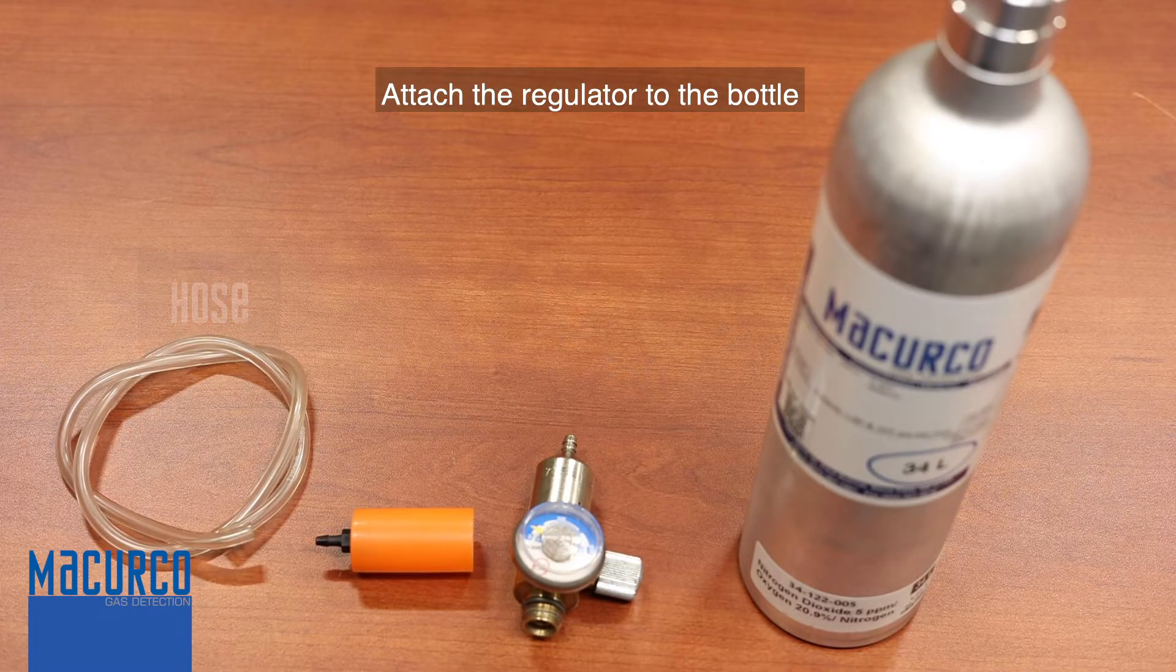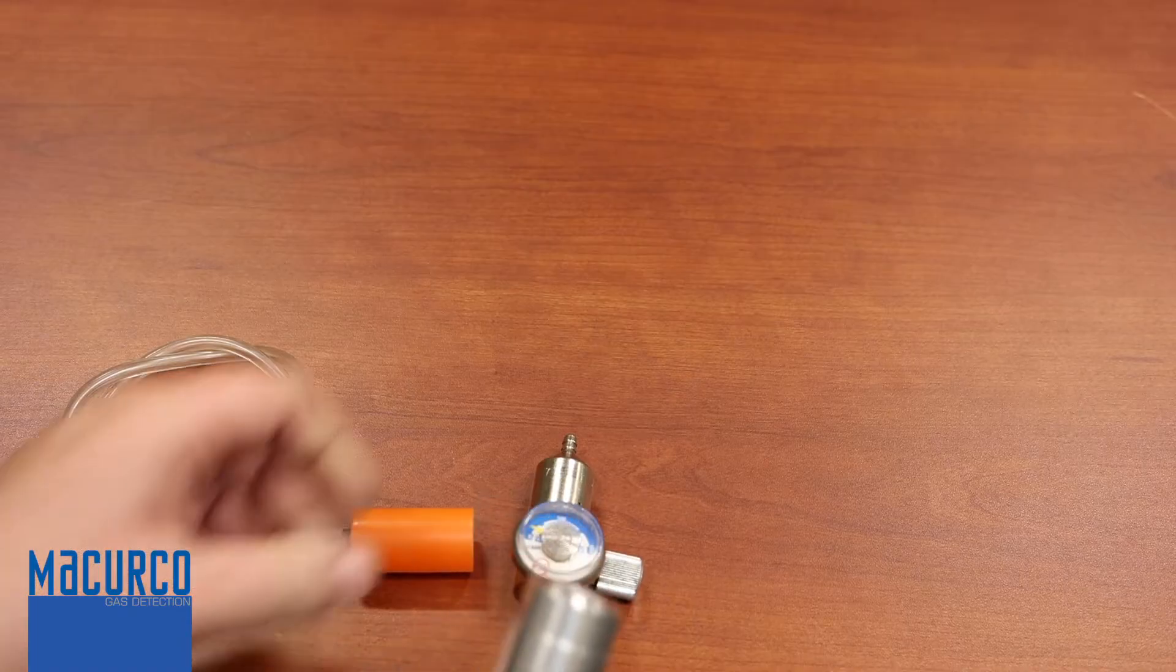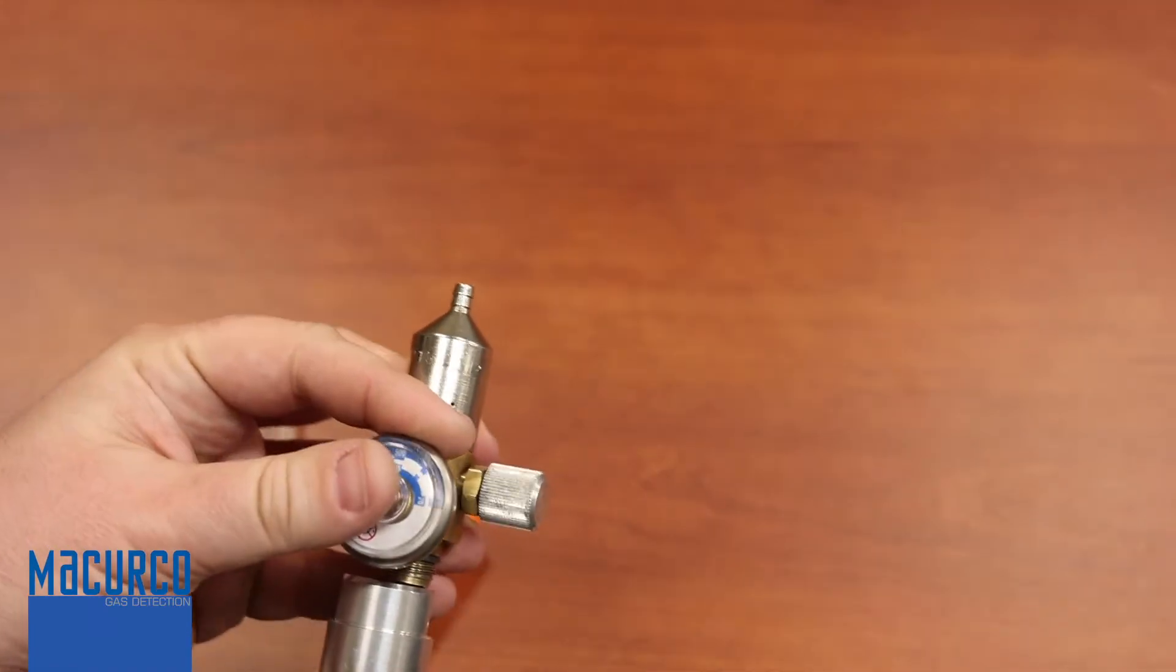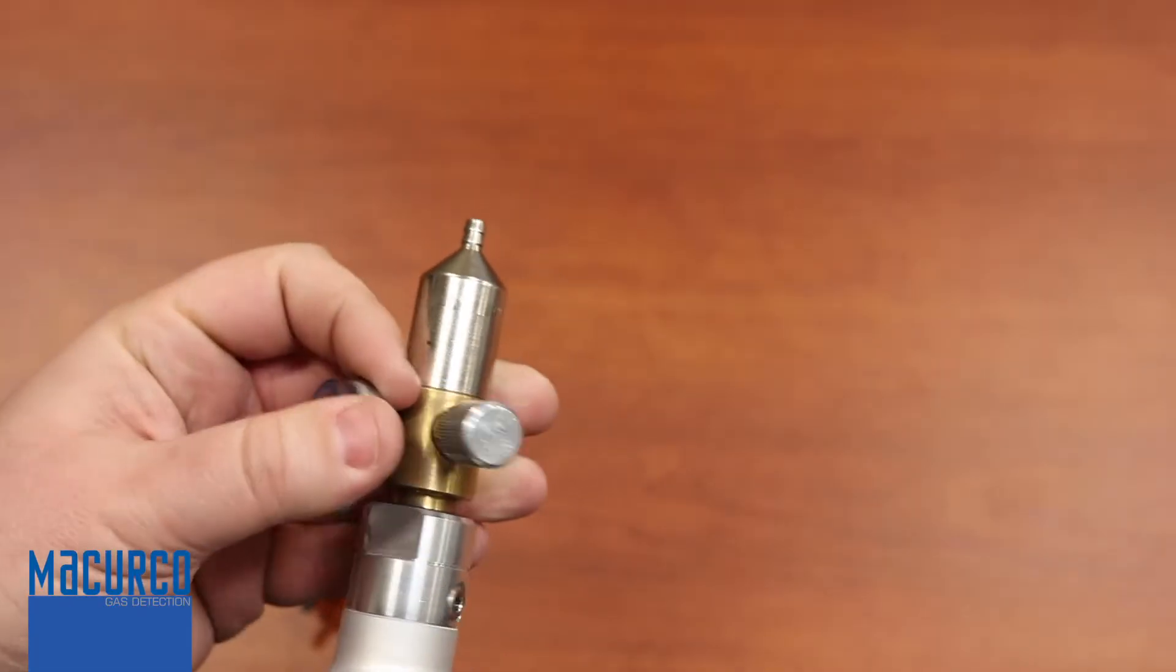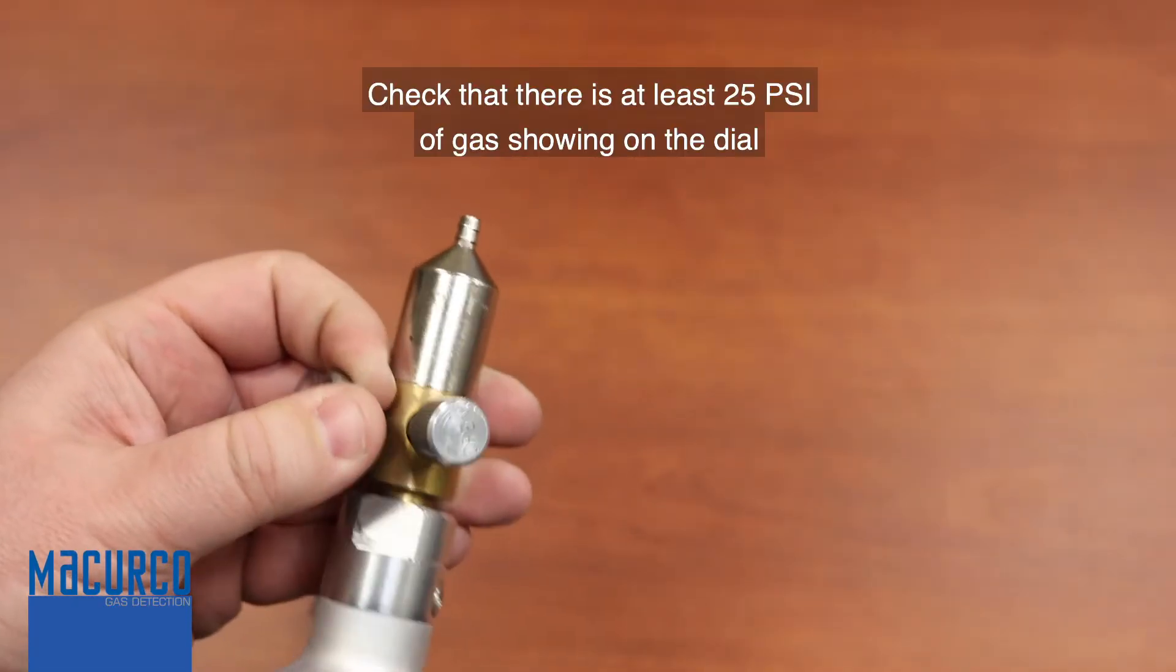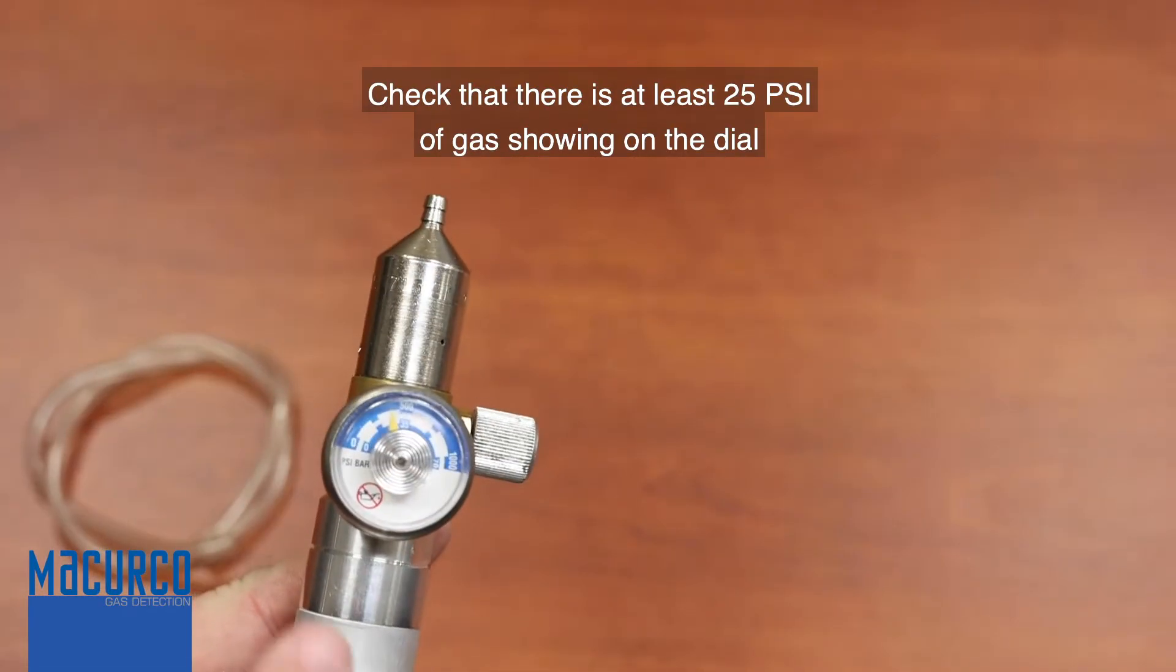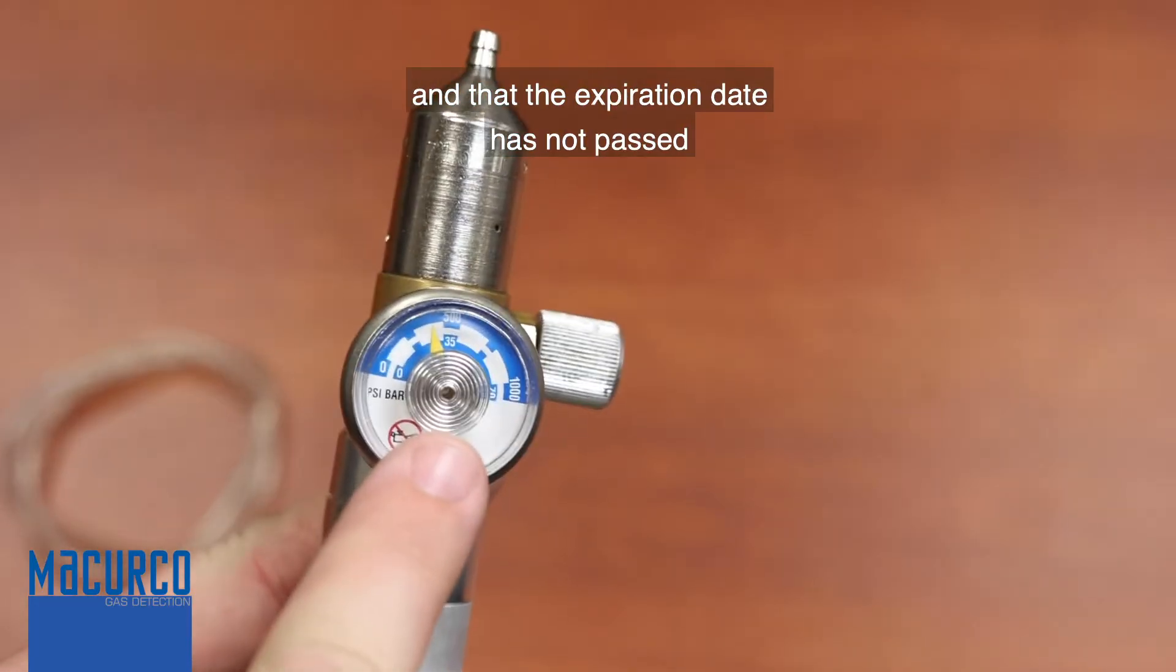Attach the regulator to the bottle. Check that there is at least 25 PSI of gas showing on the dial and that the expiration date has not passed.